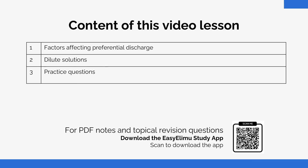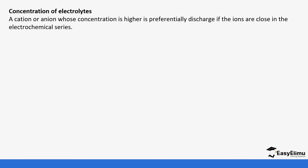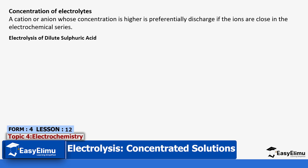We were looking at preferential discharge, and previously we looked at the location of ions at the electrochemical series. Today we are going to look at concentration. Concentration also affects what is going to be discharged. We start with dilute solutions, then the next lesson we look at concentrated solutions and compare the two. Remember the electrochemical series — cations or anions whose concentration is higher are preferred if the ions are close in the electrochemical series.